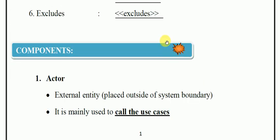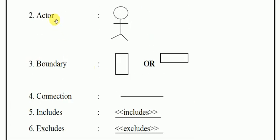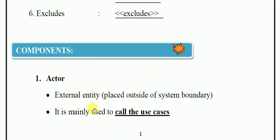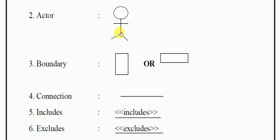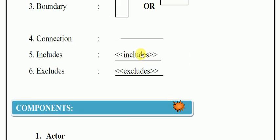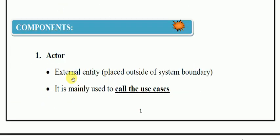The components of a use case diagram include the Actor. The actor is shown outside the system boundary. This actor is an external entity, and that's why it plays outside the system boundary. It is mainly used to call the use cases.